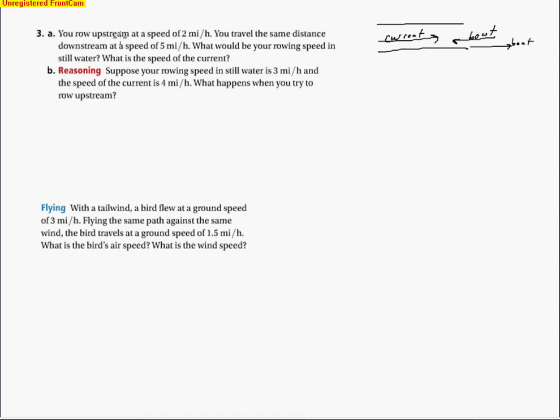So you row upstream at 2 miles an hour. And then it says you travel the same distance downstream at 5 miles an hour. What would be your rowing speed in still water? Still water means without the current. So it's the boat speed is what they're asking for. And then what is the current speed? So let's go ahead and define some variables. I'm going to use r equals the boat's rate in miles per hour. And maybe I'll use c for the currents, the current rate in the same units, miles per hour. They need to be the same units in order to compare.